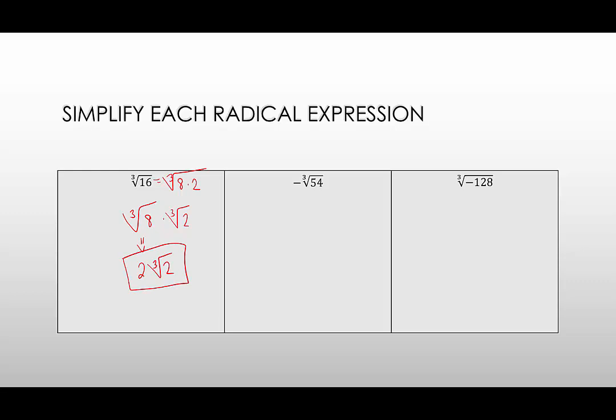In the middle, we have the negative cubed root of 54. So what's a perfect cube that is also a factor of 54, and that would be 27. So I can rewrite 54 as 27 times 2, and the cubed root of 27 is 3. There's that negative in front, so I'll bring that negative down. Negative 3, cubed root of 2.